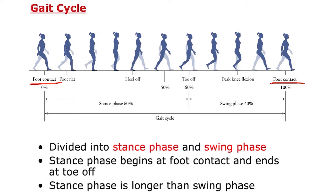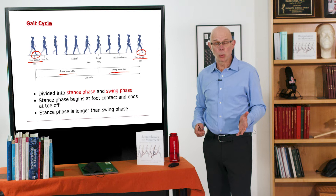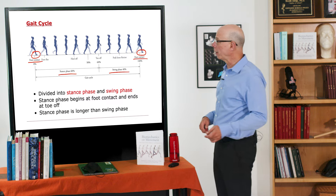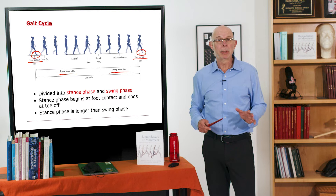We can divide the gait cycle into a stance phase and a swing phase. The stance phase is when your foot is on the ground. The swing phase is when your leg is swinging through the air. The stance phase is longer than the swing phase, so there's a period when both legs are in the stance phase — this critical period called double support.